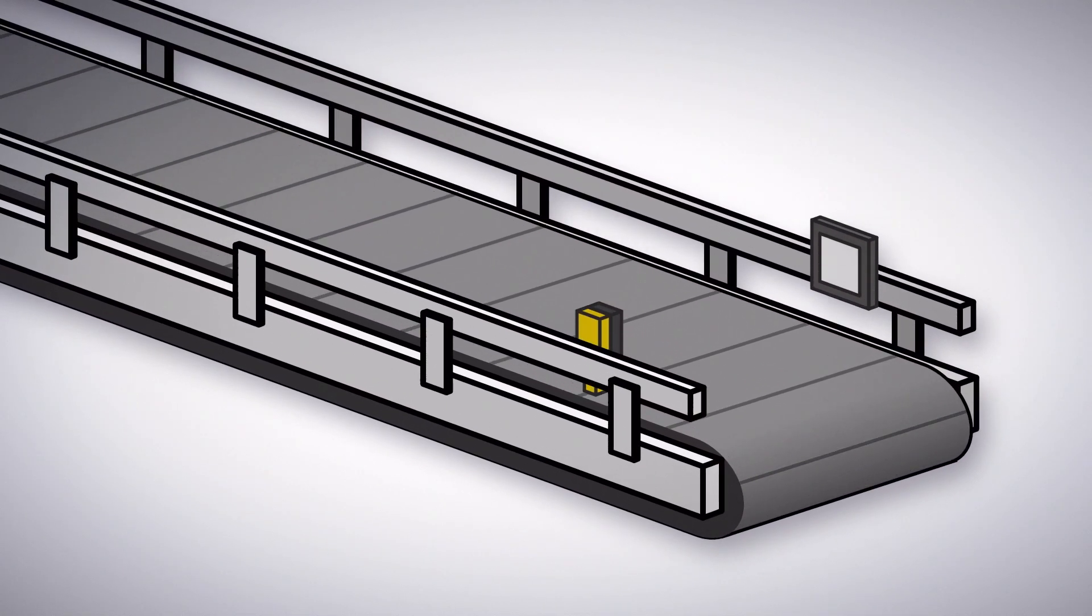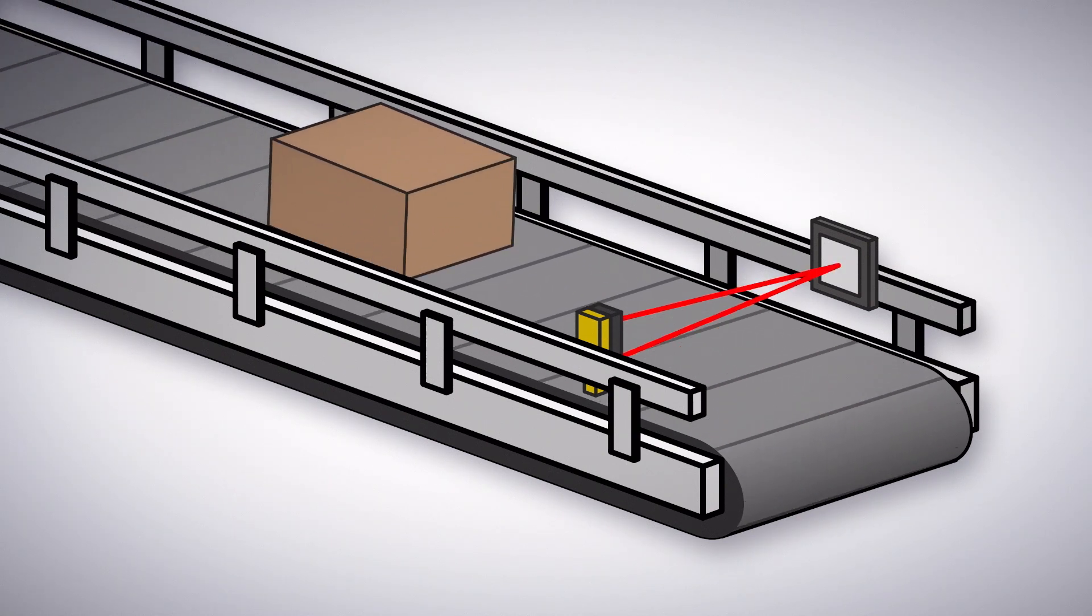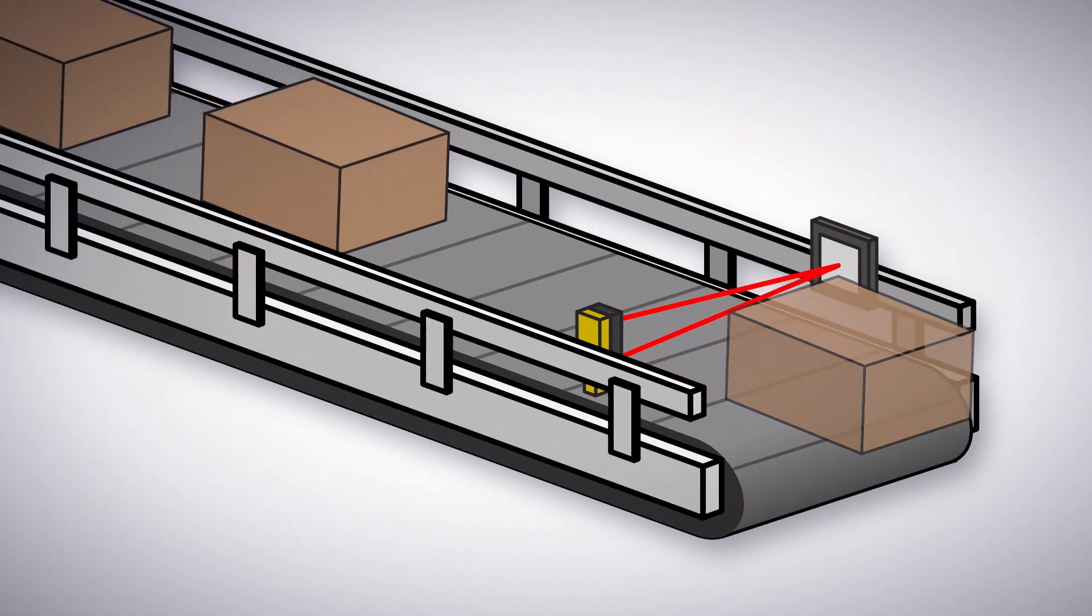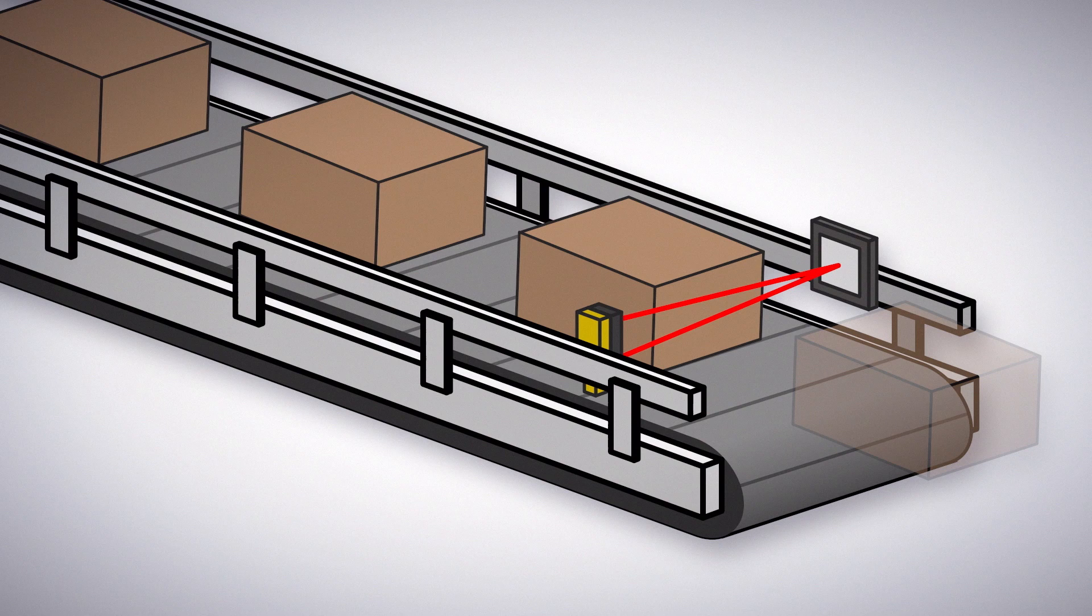The simplest tool for leading edge detection is a retro-reflective QS18 or Q20 sensor. Sufficient for many applications, this device is used on conveyors with side rails and only requires power on one side.